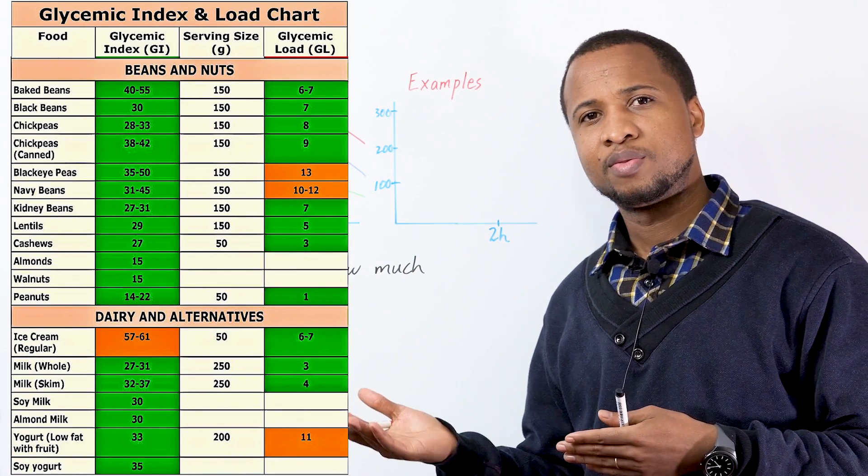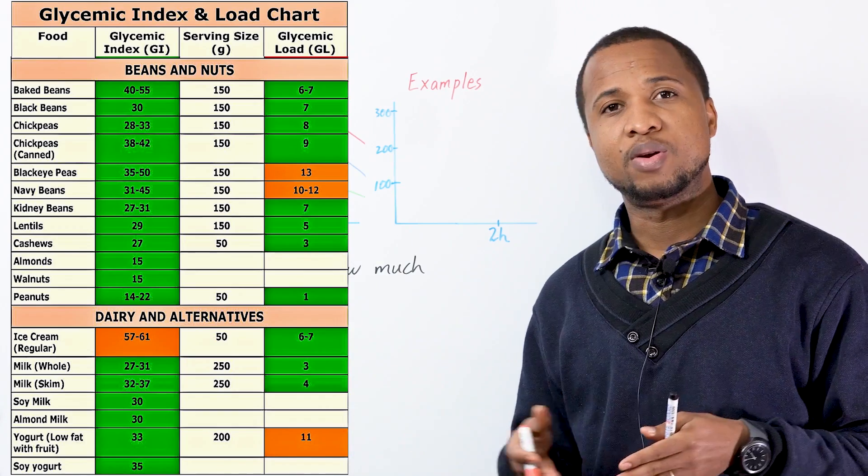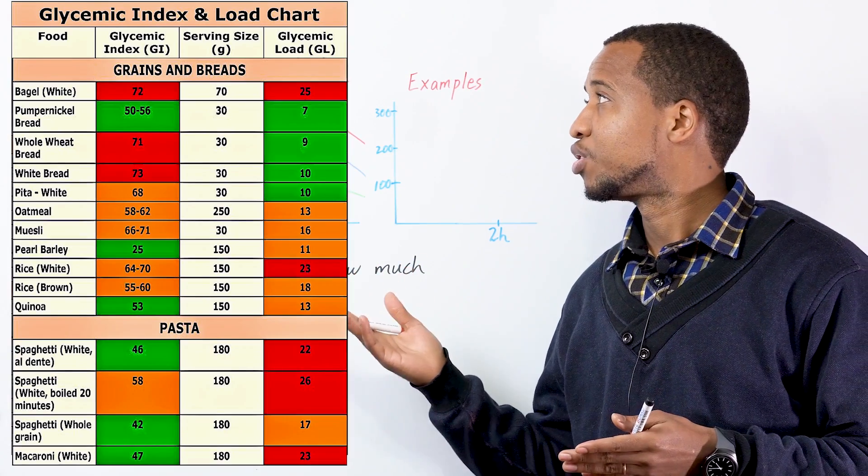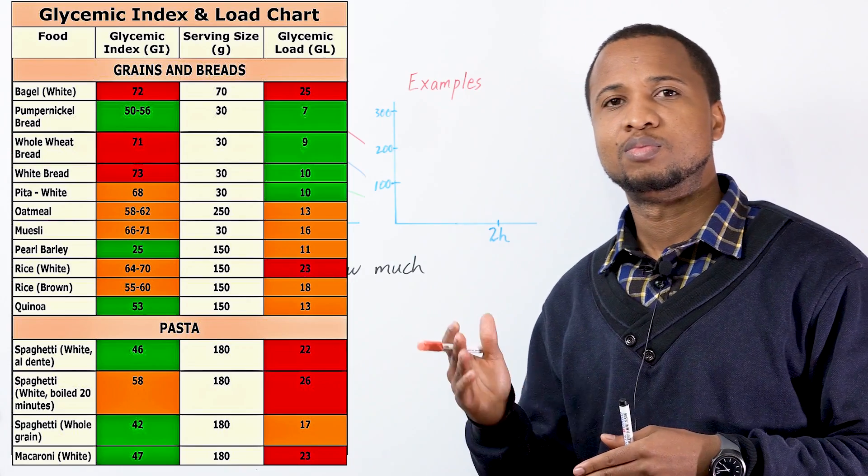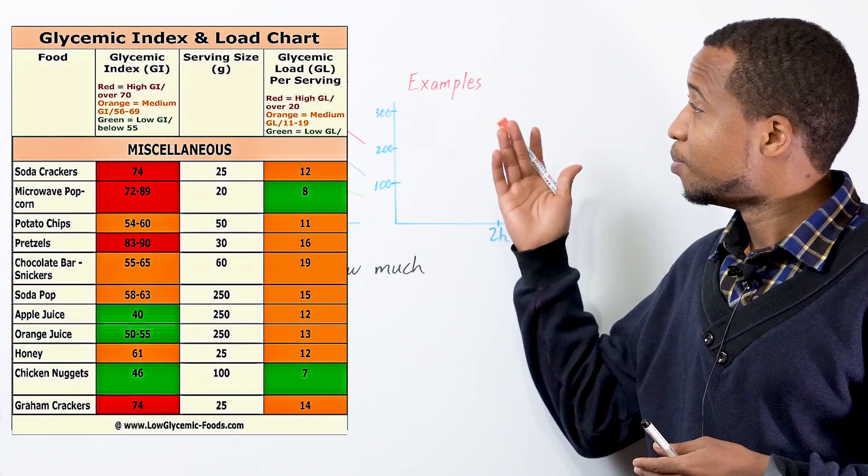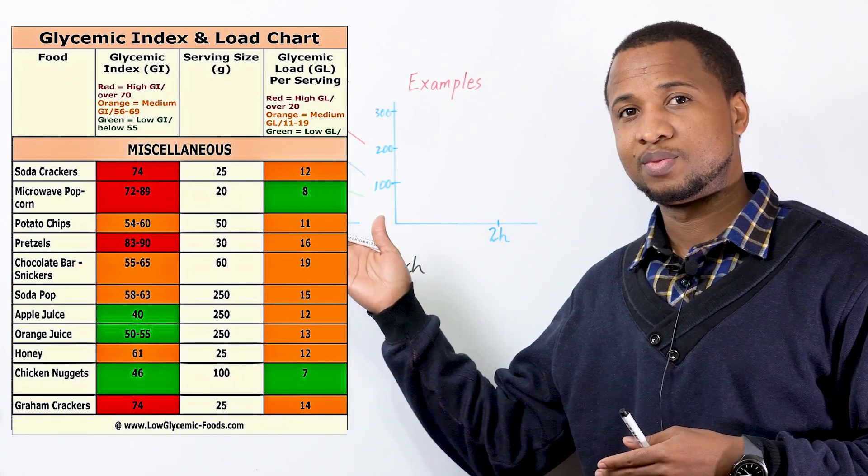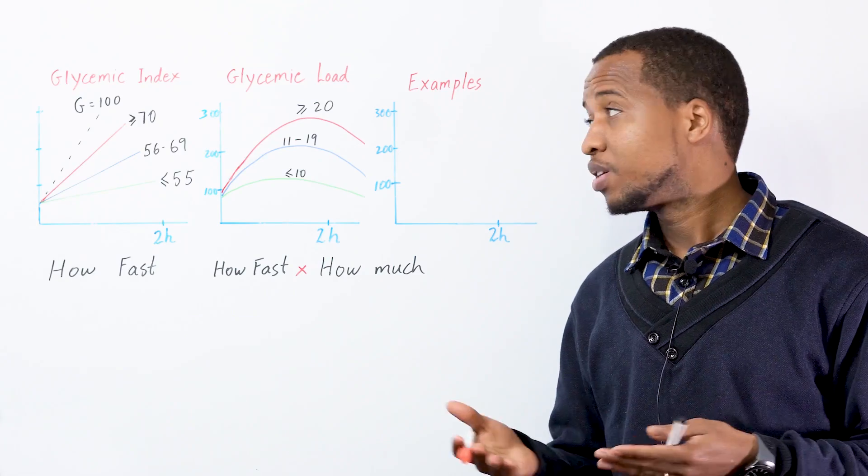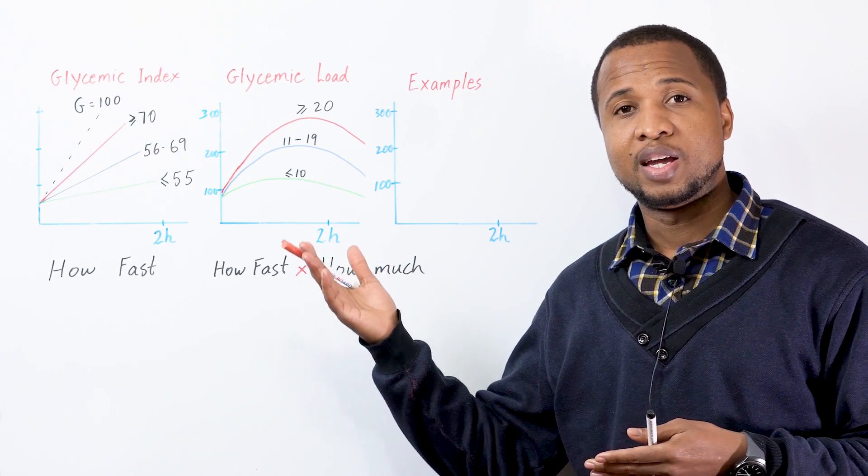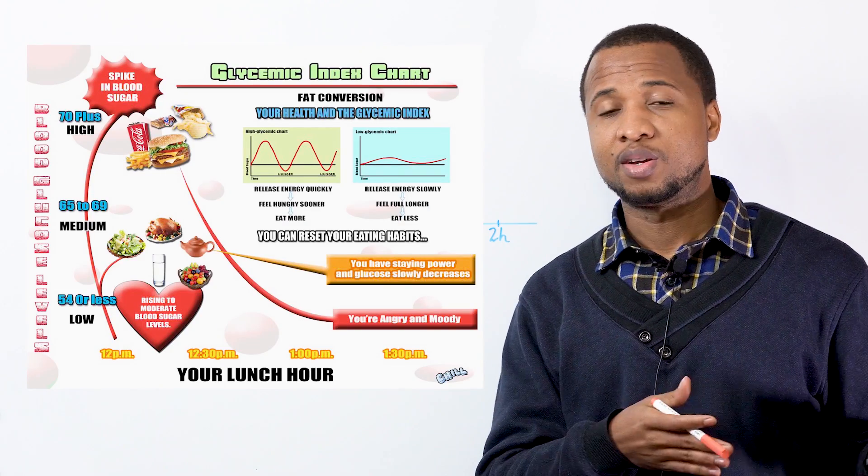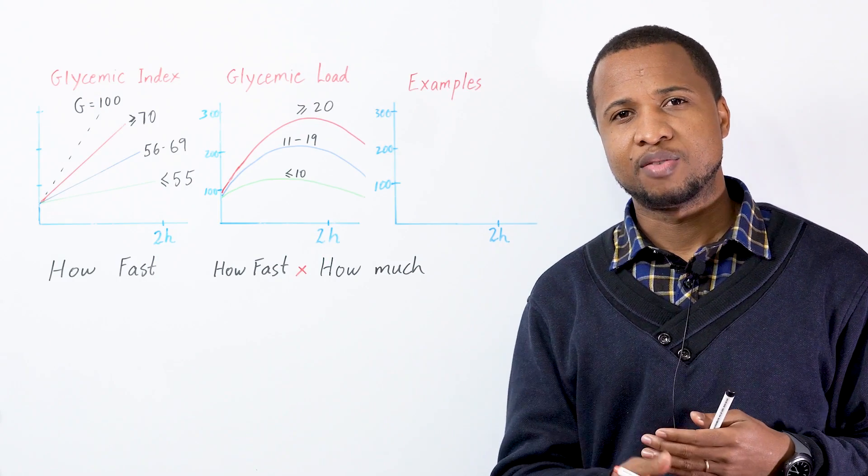Most beans and nuts are safe. Some dairy products are okay, most of them. Pasta is looking good here, but we'll talk about it later. And as expected, most of the sugary stuff raise your blood sugar pretty quickly. Now, if you consider glycemic index and use it when you're choosing the food that you eat, you're doing great. It's better than nothing, right? But we need to take it to the next level.